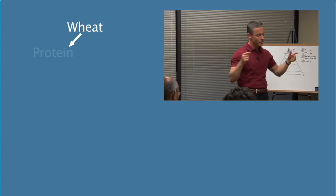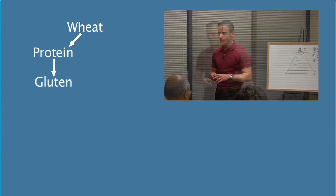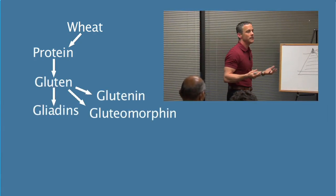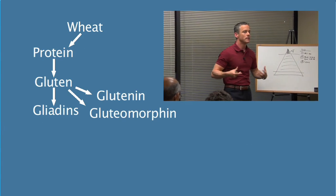First of all, it breaks down into a protein, which is gluten, and the gluten breaks down into gliadins. Gliadins are basically just the protein that makes up gluten.